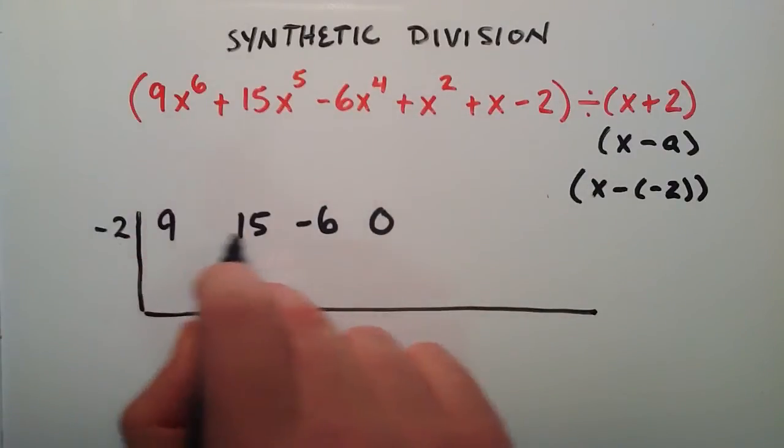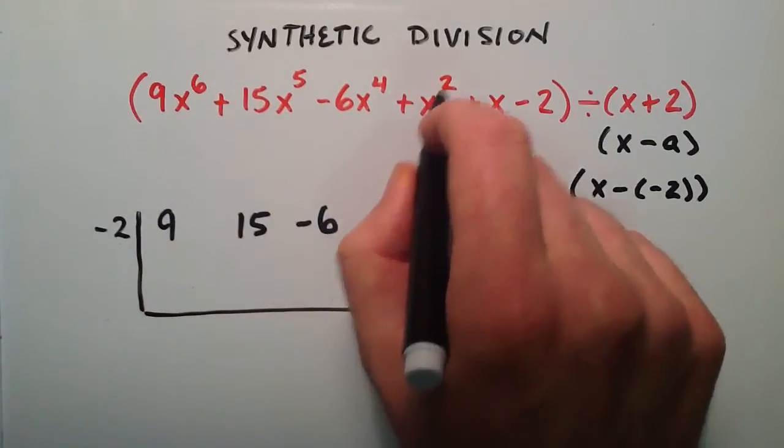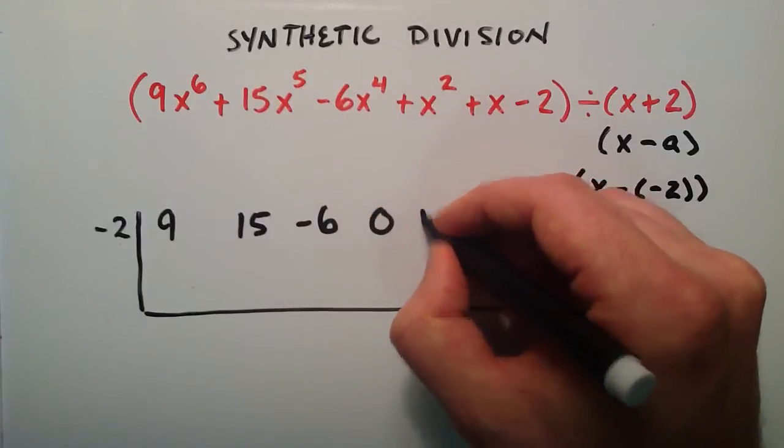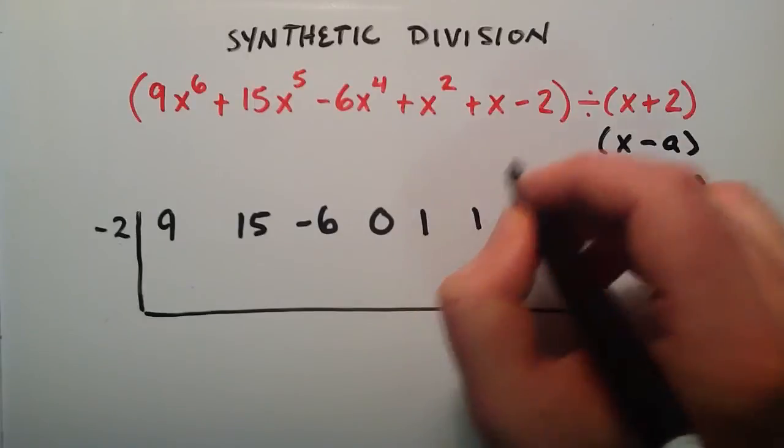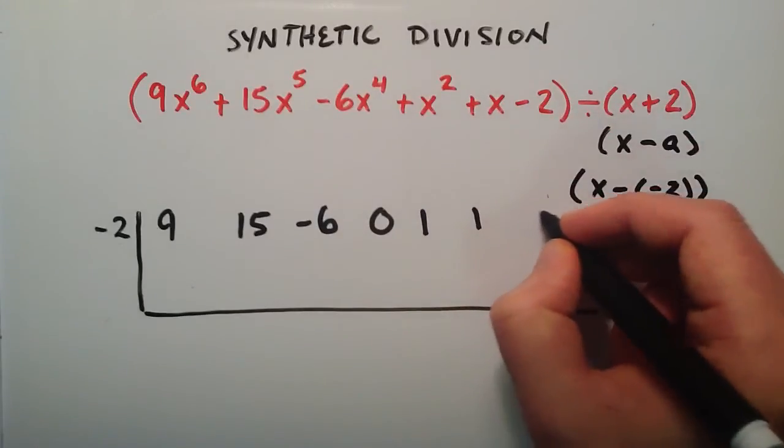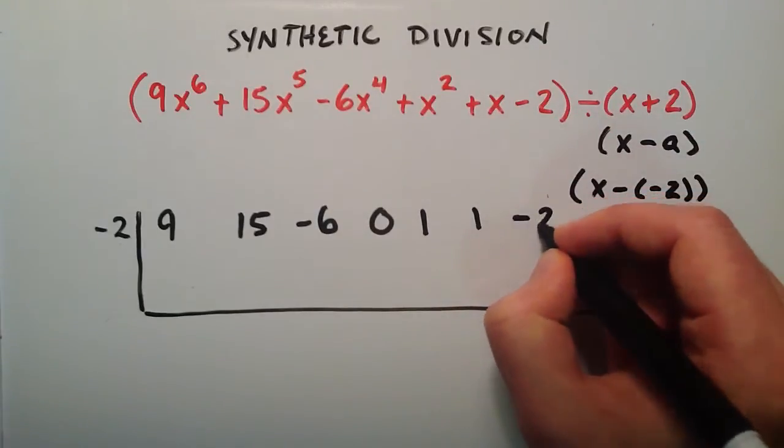So this is x to the 6th, 5th, 4th, 3rd. Now we're at x to the 2nd which has a coefficient of 1. And then x to the 1st has a coefficient of 1. And then we have our constant term which is negative 2.